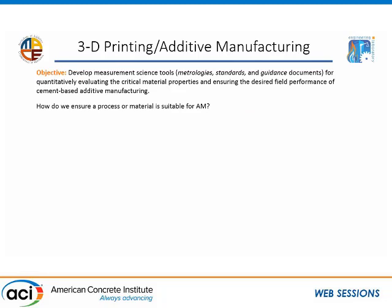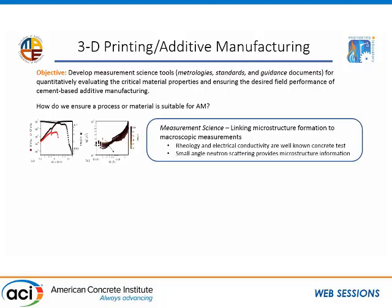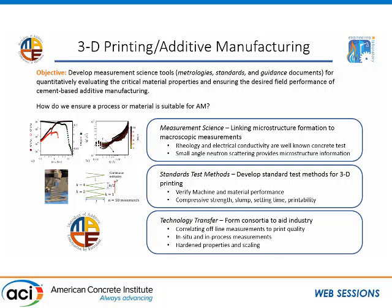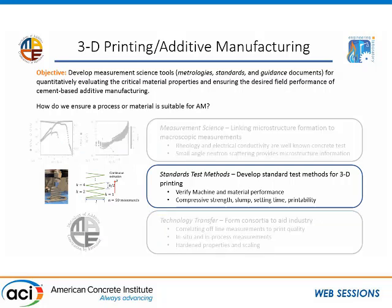The project at NIST on 3D printing is focused a lot around developing the measurement science tools to enable this process. That gets into everything from the material science aspects, looking at the formation of microstructures and how that relates to rheological measurements, to the processing side — scaling up to paste, mortar, and concrete, and understanding how we can make measurements of the material at that scale and how it relates to 3D printing. Today I'm going to focus on the standard test methods that we're starting to work on.